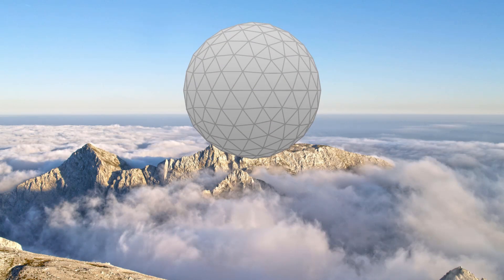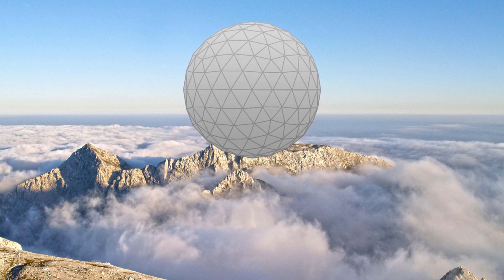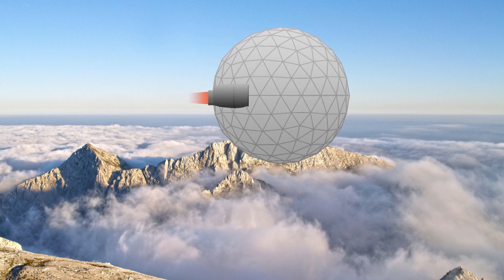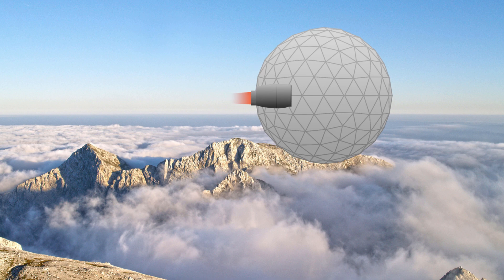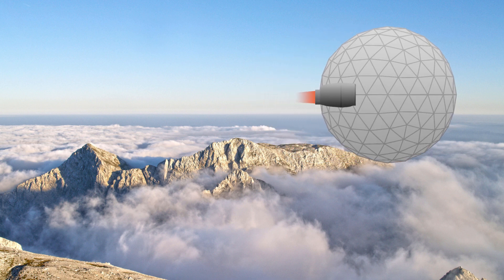They could be anchored above inhabitable areas like mountains. Furthermore, the spheres could be designed to drift in the air. This would allow their population to see the world and even migrate like birds.